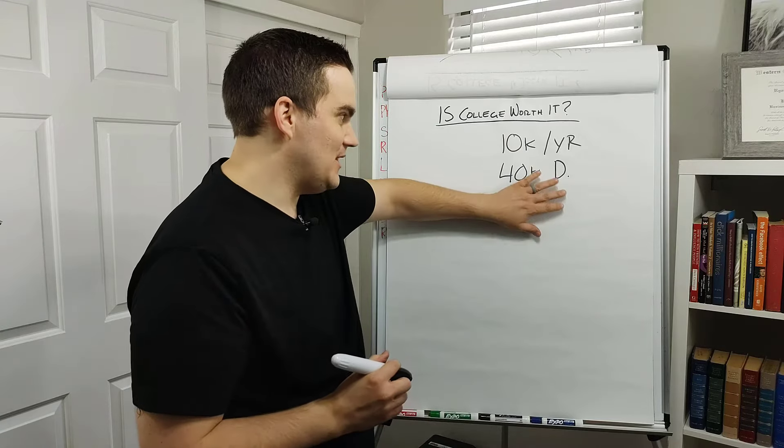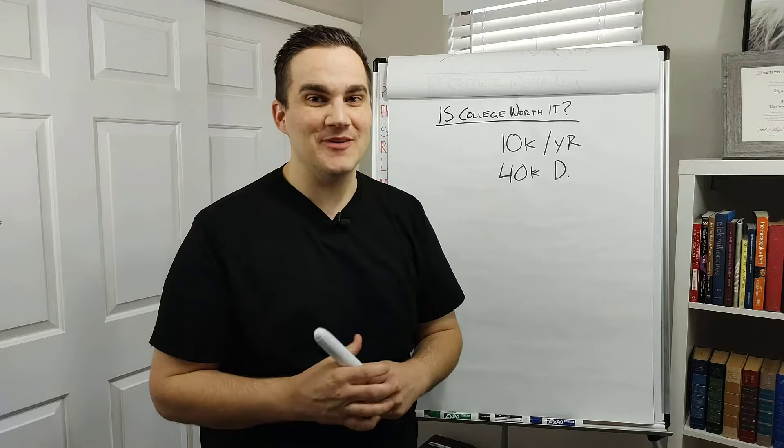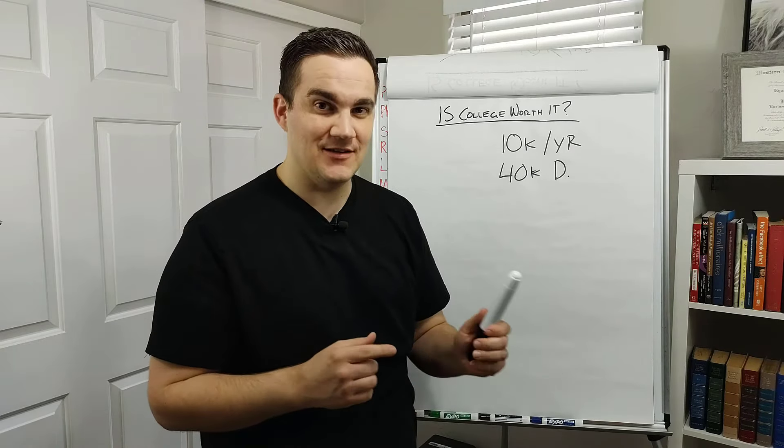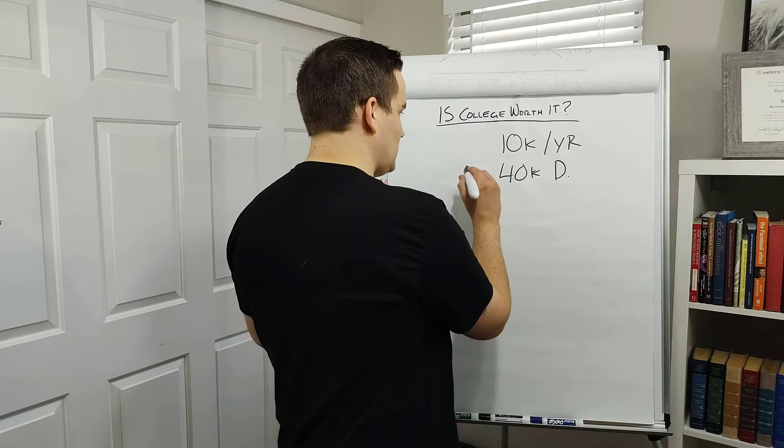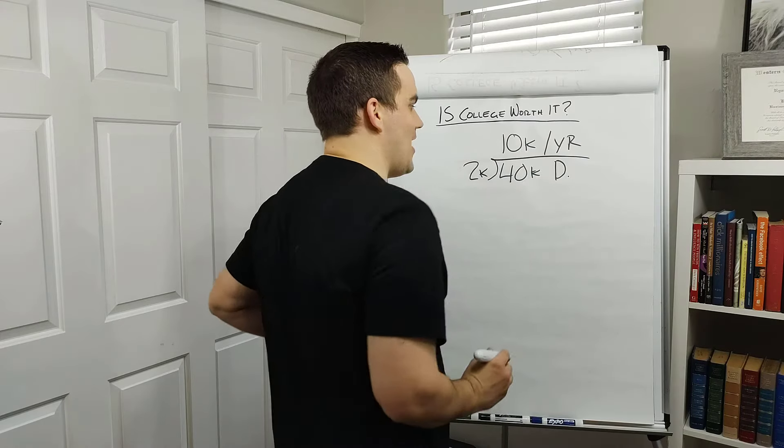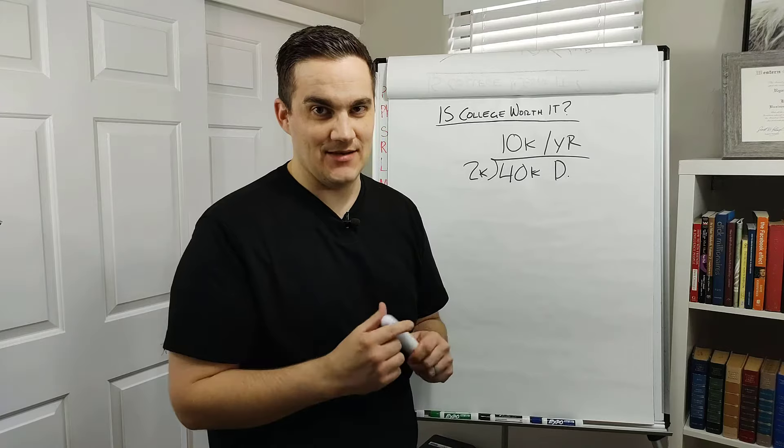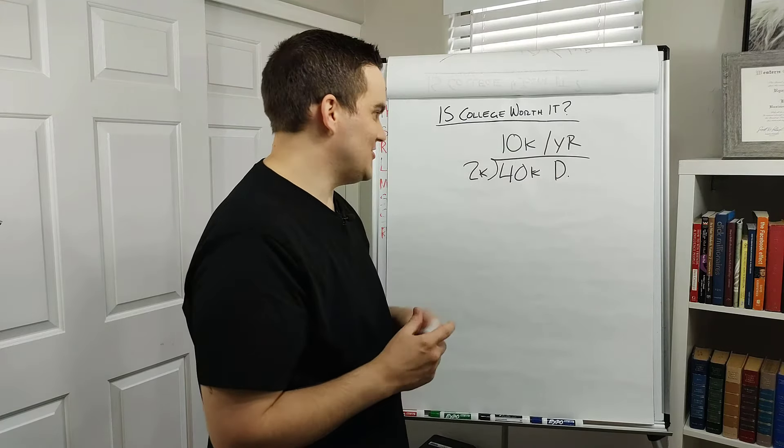But this $40,000 in debt is going to buy me a diploma and that diploma is going to get me a big pay raise, right? The average pay raise of a college grad is $2,000 a month. So we can divide our $40,000 debt by $2,000 a month and we can start chipping away at that debt. Well, here's the honest truth.